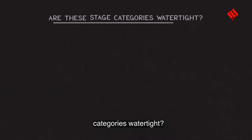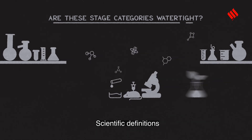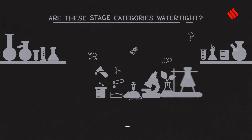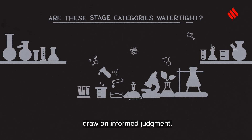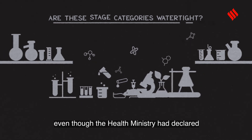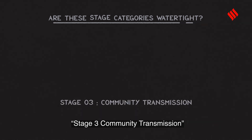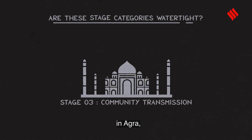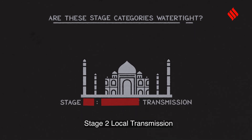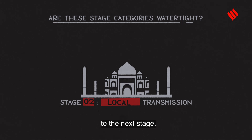Are these stage categories watertight? Scientific definitions are usually very precise, but classifications can also draw on informed judgment. That is also why, even though the health ministry had declared stage 3 community transmission in Agra, scientists say it was just stage 2 local transmission but at the community level. There have to be more of these cases to move on to the next stage.